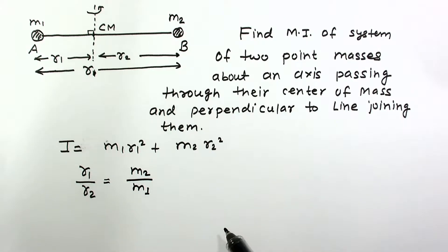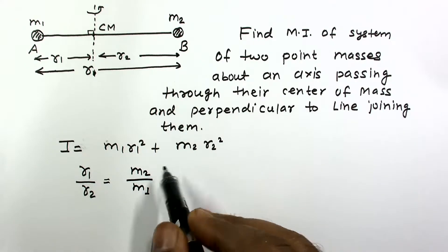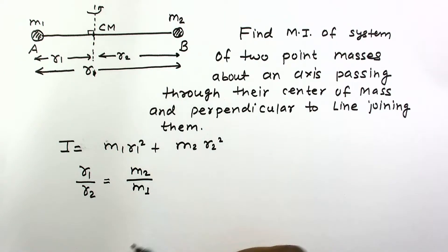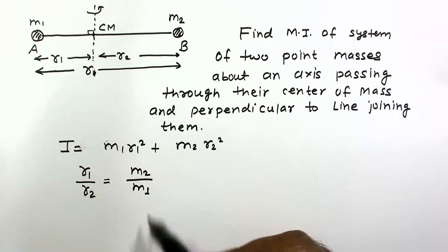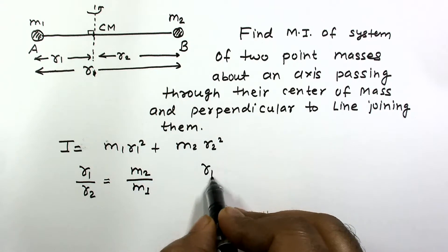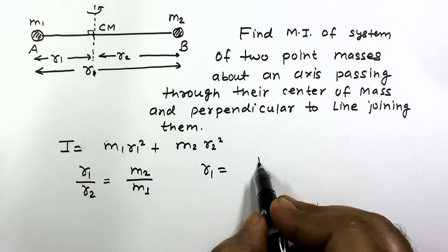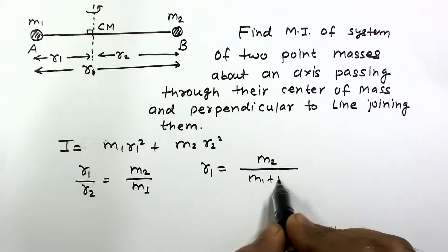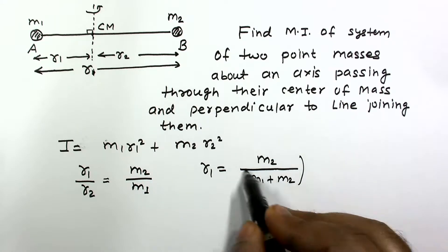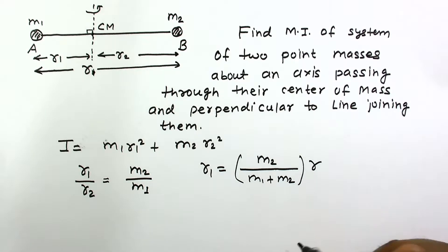So here will be M2. R1 is equal to M2 over the total mass, this factor will be multiplied by total distance. R2 equals M1 divided by M1 plus M2 times R.